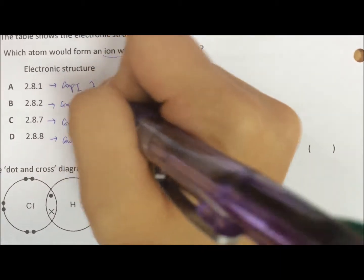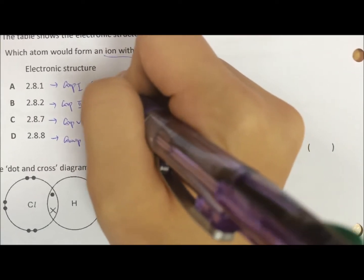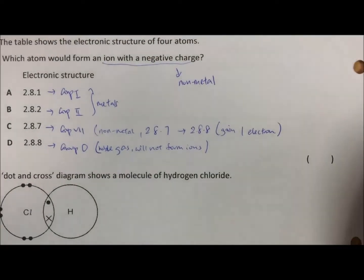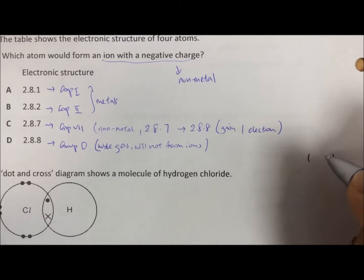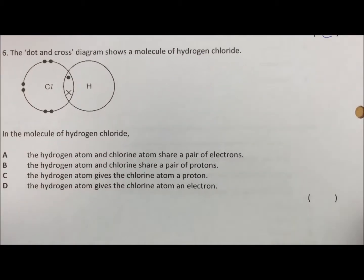So if you want to check, option A and B, group 1 and group 2, both are metals. So our answer is C because it is a non-metal.